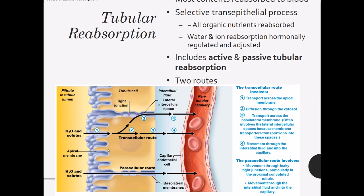Pretty much anything that is useful to your body — all of your organic nutrients, amino acids, sugars, fatty acids — anything your body can use will get reabsorbed by the renal tubules. All the other stuff — ions, water — it's kind of: if we need it, we reabsorb it; if we don't need it, we get rid of it and let it stay in the filtrate. It really is just a matter of what your body needs at any given time.